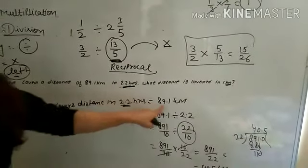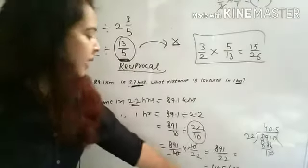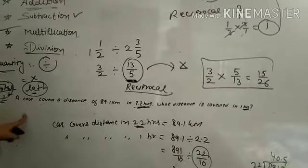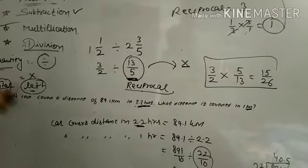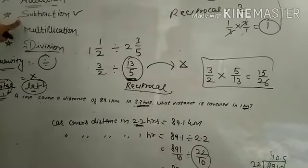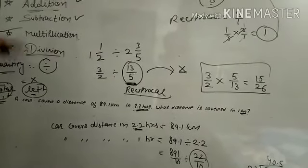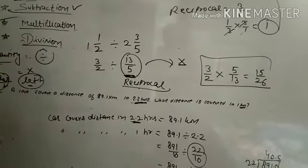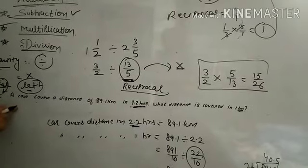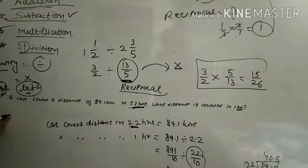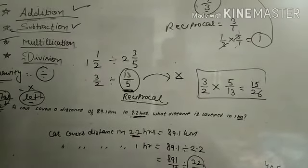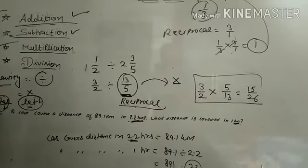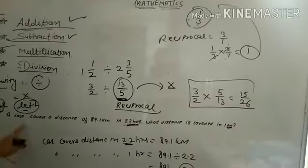So given 89.1 km in 2.2 hours, we found the distance covered in 1 hour is 40.5 km. These are the statement sums - you can easily find where to use addition, subtraction, multiplication, or division. Most confusion is in multiplication and division, not addition or subtraction. I will give two questions for revision. You can revise Chapter 2 properly with this video, and in the next video we will revise Chapter 3. Have a good day.